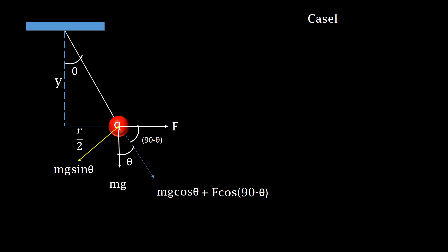Component of F along the string in downward direction is F cos of 90 minus theta. So the tension in the string is mg cos theta plus F cos of 90 minus theta.